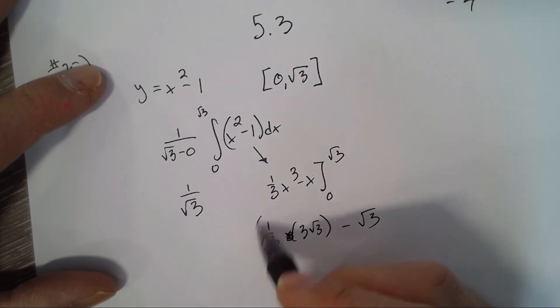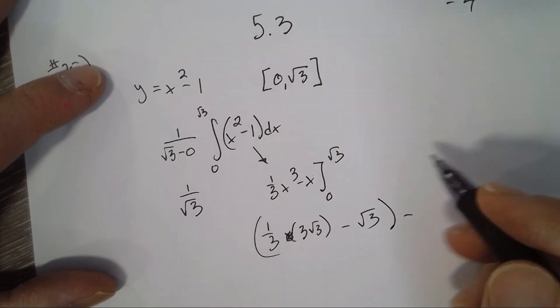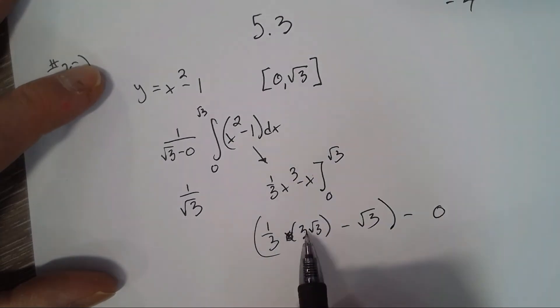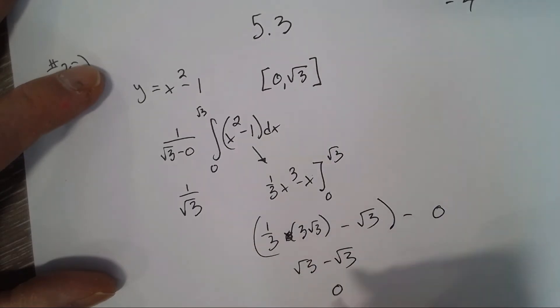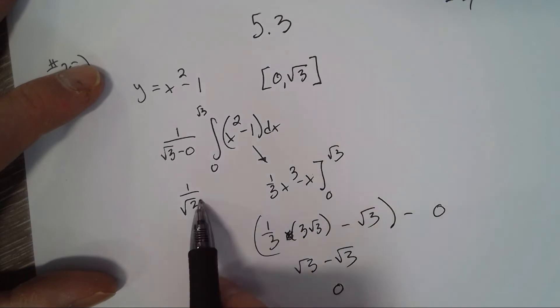And all that minus 0. So 1/3 times 3 is 1, so square root of 3 minus square root of 3, we end up getting 0. And then we have to multiply by 1 over square root of 3, and we get 0.